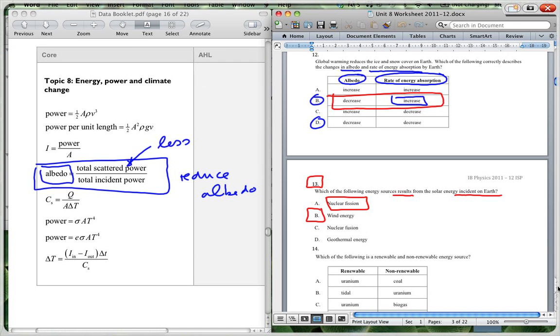Wind energy is caused by convection currents. By heating up the air, it causes the air to expand. And that causes movement of the air. So that's all caused by solar energy. Nuclear fusion? No. Geothermal energy? No. I mean, these could have been caused long term ago. But generally, we have wind energy would be your best answer there. So B is the correct one.